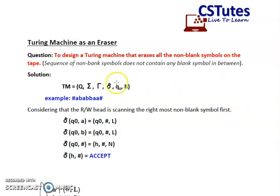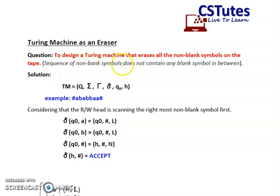The objective is to design a Turing machine that erases all the non-blank symbols on the tape. Whatever non-blank symbols are present in our string, we need to remove all of them. One condition given to us is that the sequence of non-blank symbols does not contain any blank symbol in between — the string will not have a blank symbol in the middle.